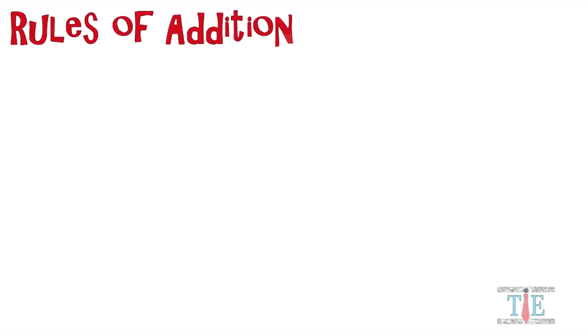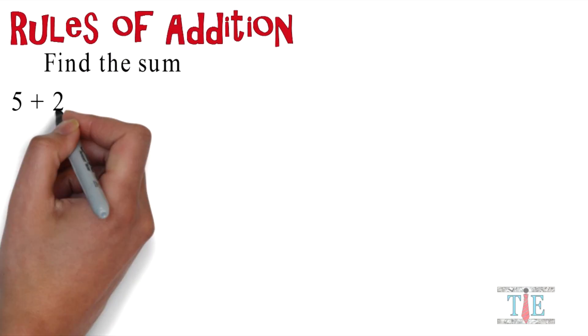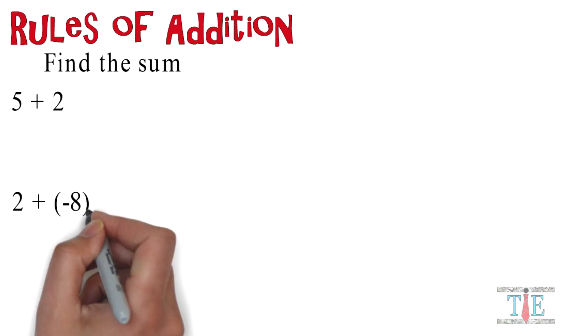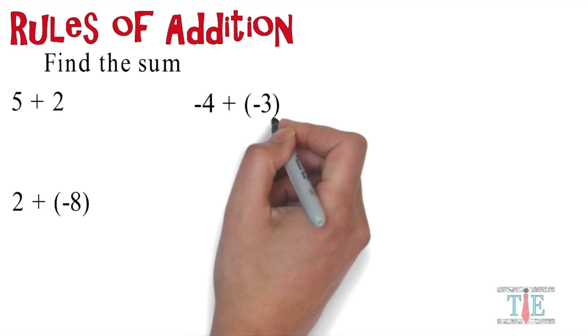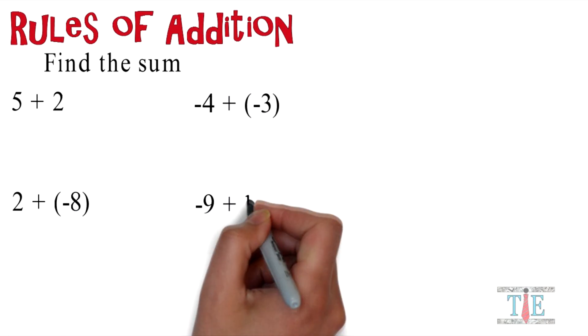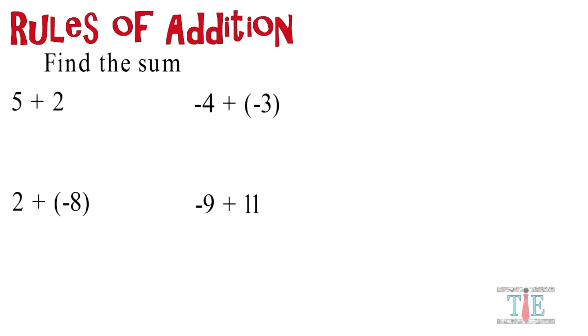The rules of addition: find the sum. You're given 5 plus 2, 2 plus negative 8, and negative 9 plus 11. Right now I want you to take a second, think about this and try to solve it out for yourself.